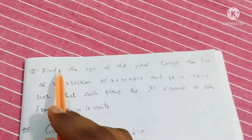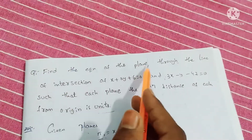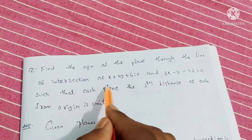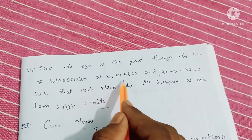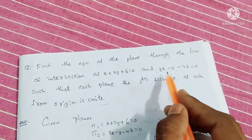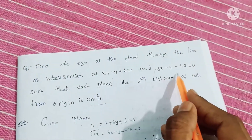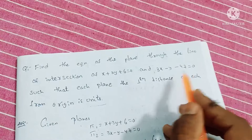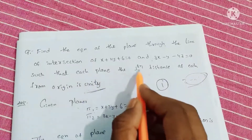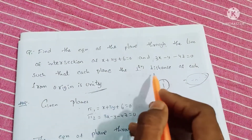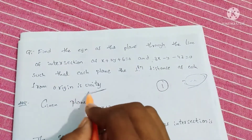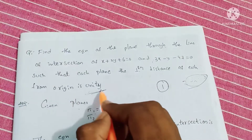Find the equation of the plane through the line of intersection of x plus 3y plus 6 is equal to 0 and 3x minus y minus 4z is equal to 0, such that the perpendicular distance of each plane from the origin is unity.